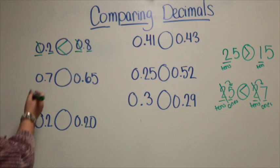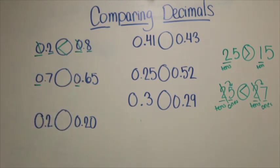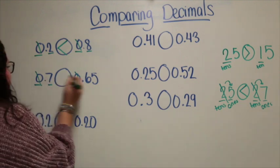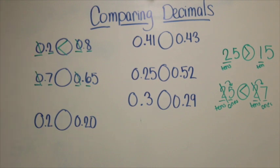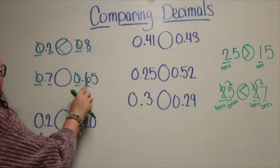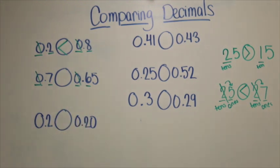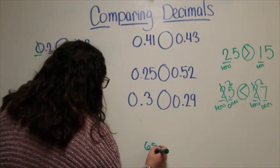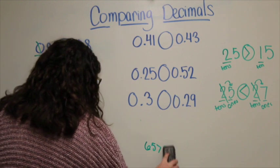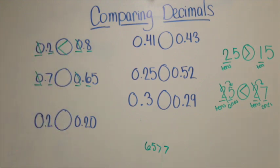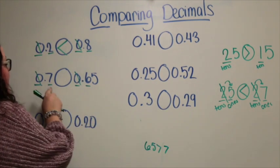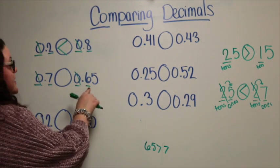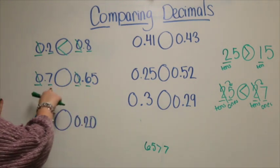I'm going to do the same process — start with my greatest place value, the ones. They are both the same digit, so that won't help me compare. I go to my tenths place value. In this number I have a seven in the tenths place, and a six in this tenths place. You might be saying, 'Well, sixty-five is greater than seven.' You are correct — sixty-five is greater than seven. However, we are not comparing the number sixty-five and the number seven. We are comparing sixty-five hundredths with seven tenths.